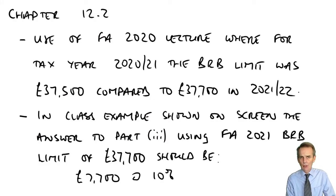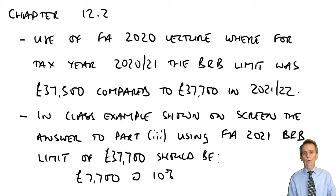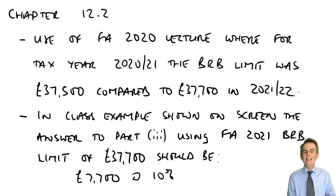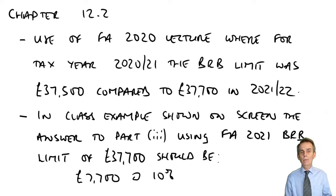Having seen our first lecture in chapter 12 on CGT for individuals, we saw how to compute an individual gain or loss arising on a chargeable disposal of a chargeable asset, and then how to bring all those gains and losses together to establish a net overall gain. From there, by deducting the annual exempt amount, we established the taxable gain. Once you've got the taxable gains, the logical next step is to tax it.